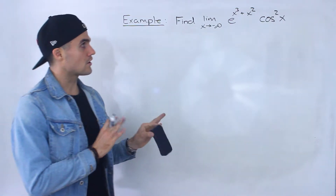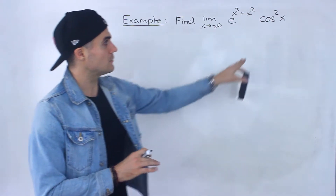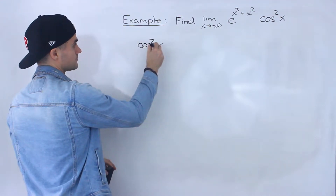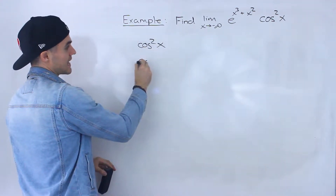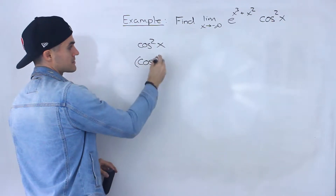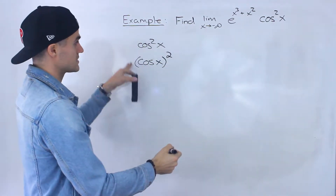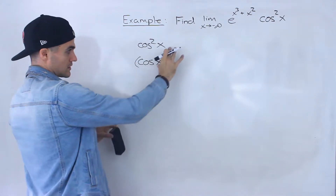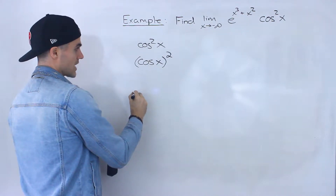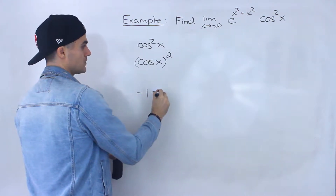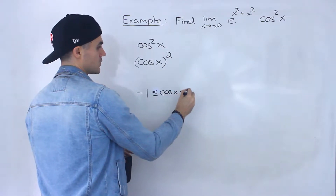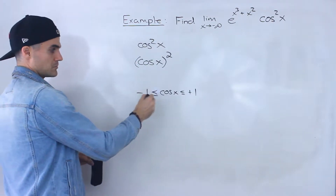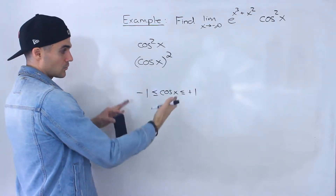What I want to do to start off this limit is first talk about cos squared x. Cos squared x is the exact same thing as (cos x) squared — both of these mean the same thing. Now, cos x, forgetting about the square for now, we know that it's always going to be between negative 1 and positive 1. That's what the wave is going to range between.